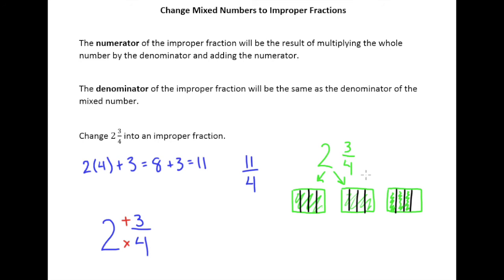And then add the numerator simply because there's another 3 that we have to account for that were already there.